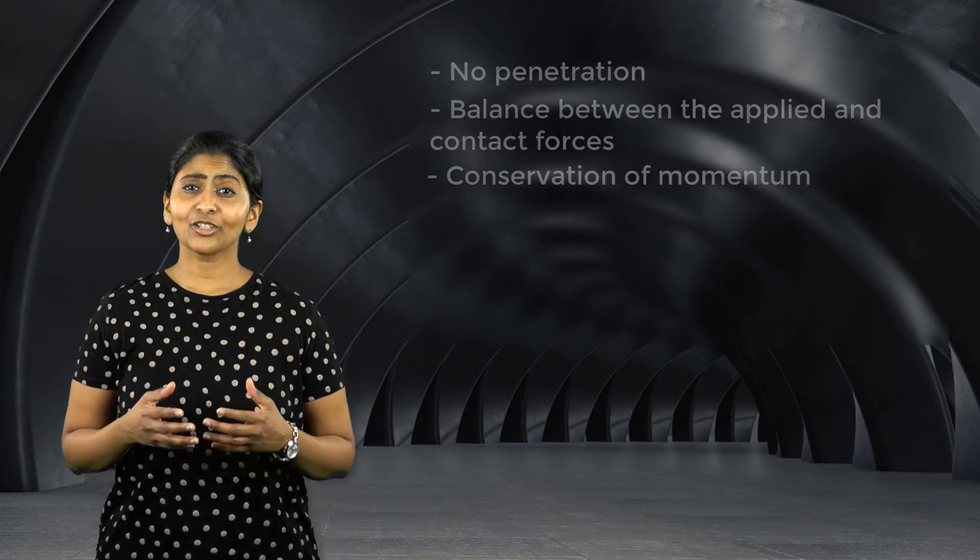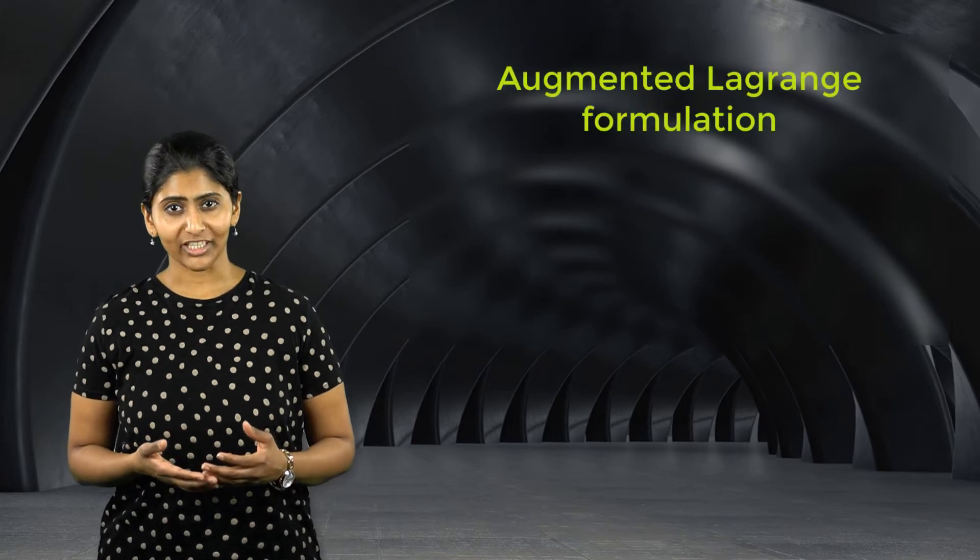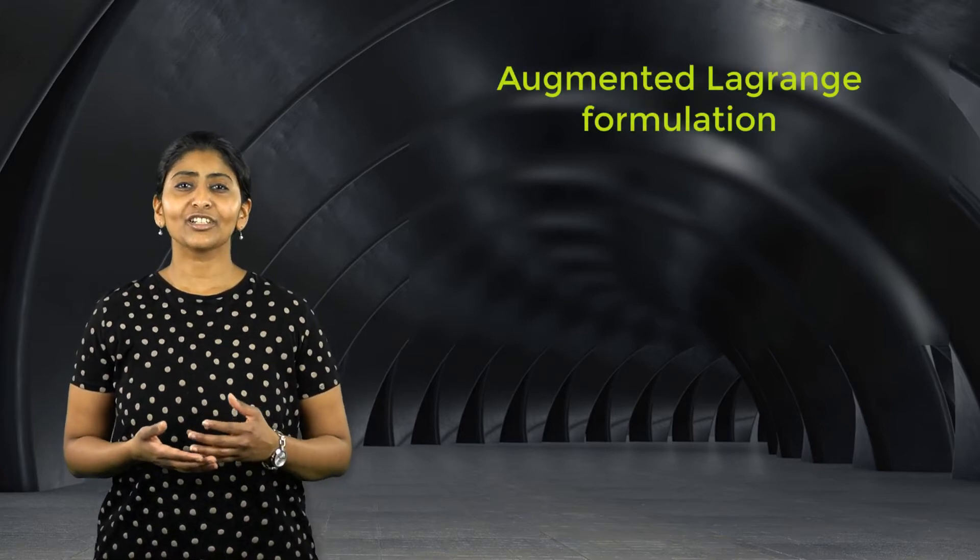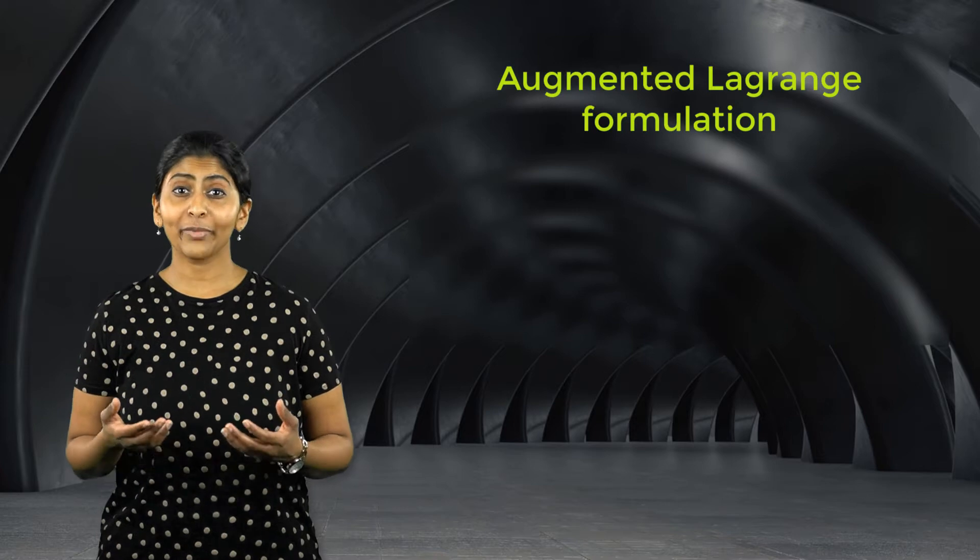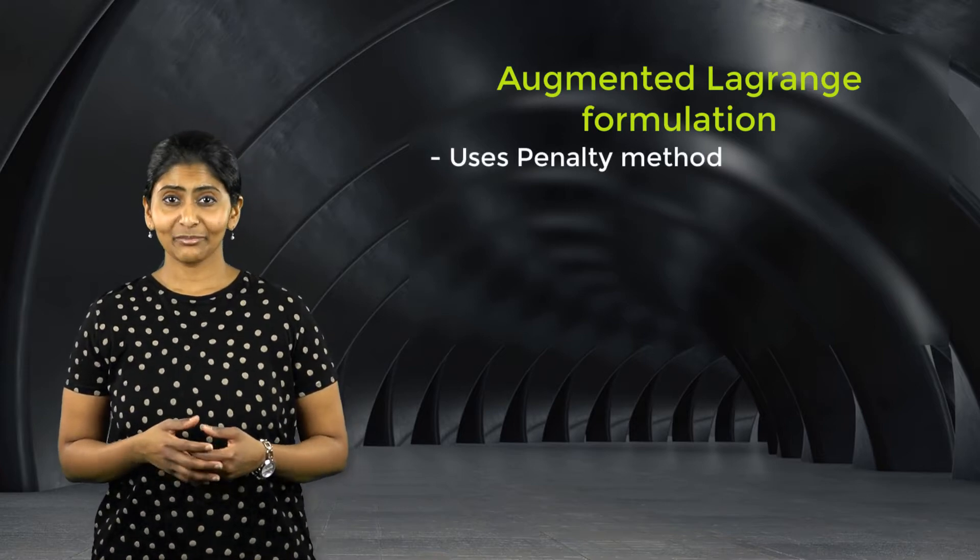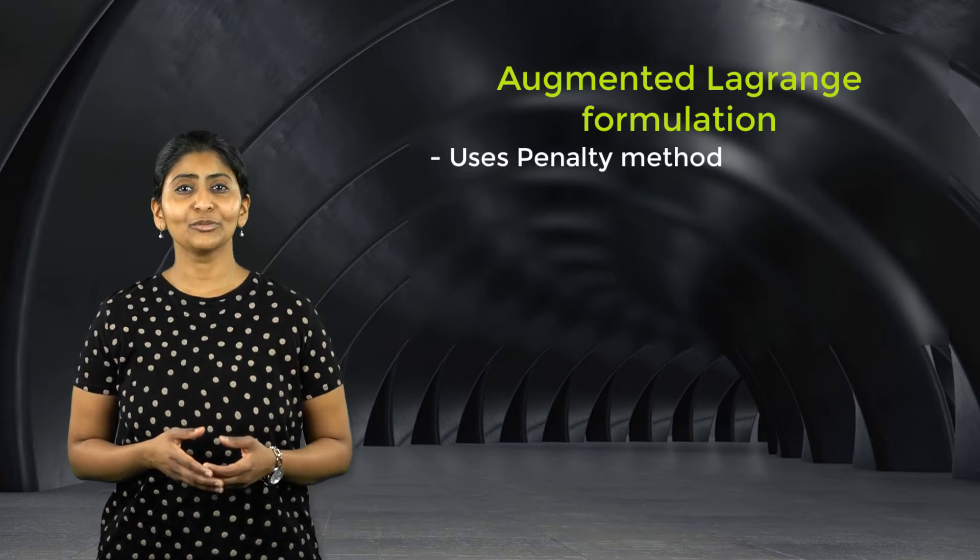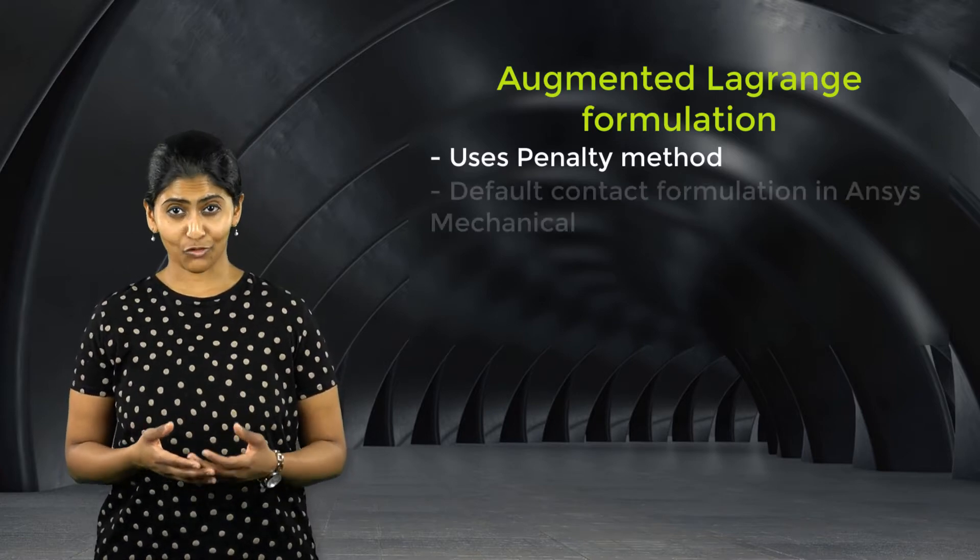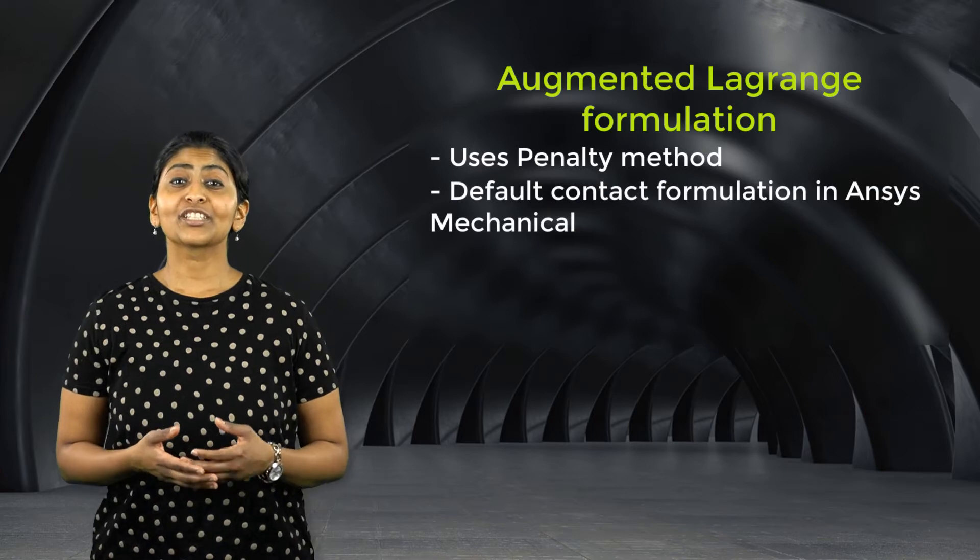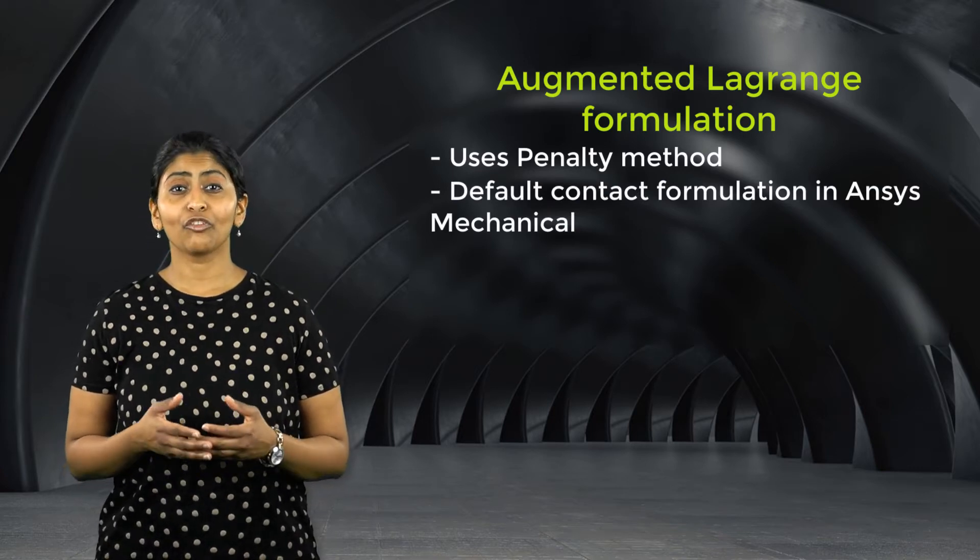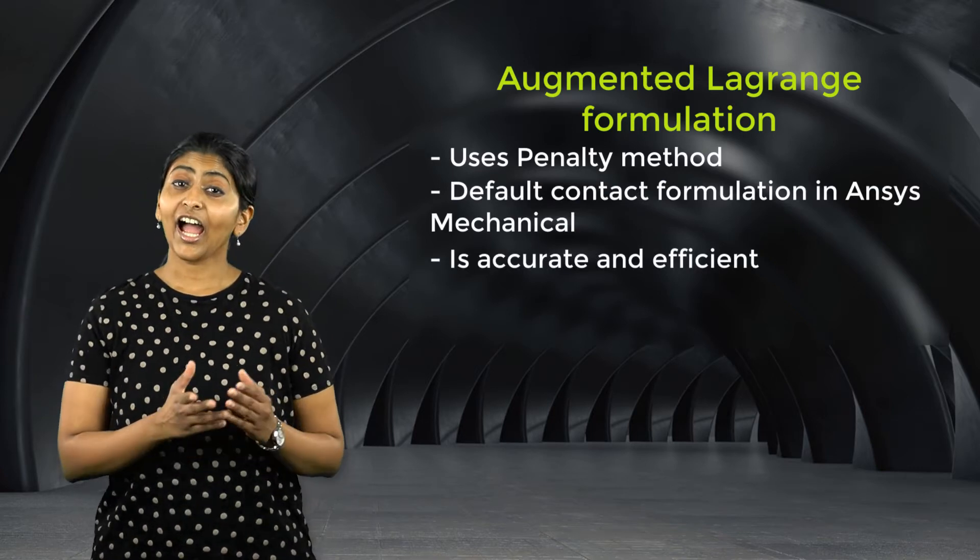While there are several contact formulations to enforce these conditions, we will focus our attention on augmented Lagrange formulation, which uses a form of what is called penalty method. In ANSYS Mechanical, augmented Lagrange formulation is used as the default contact formulation due to its robustness in terms of both accuracy and efficiency.